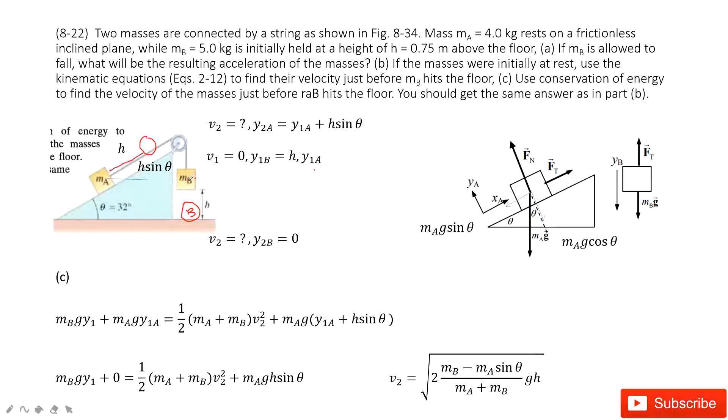This is H. This is the length for the string. How much did it move in the vertical component? H sin θ. So we can see finally the position for object A is just Y1A plus H sin θ. So now we find the initial state and the final state. We can consider the conservation of energy.